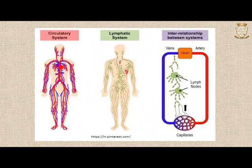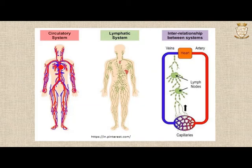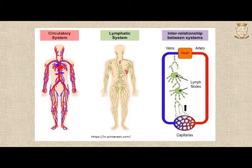The two systems are interconnected. The lymph originates from blood. While blood flows through the capillaries, a fluid seeps out from the capillaries into the interstitial space between cells and tissues. This interstitial fluid is collected by lymph vessels and flows through them, reaching the lymph nodes and finally returning to the blood circulatory system near the heart. The largest lymph vessel, the thoracic duct, carries the lymph back into the left subclavian vein near the heart.